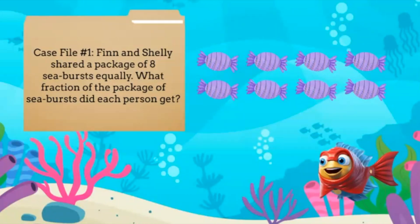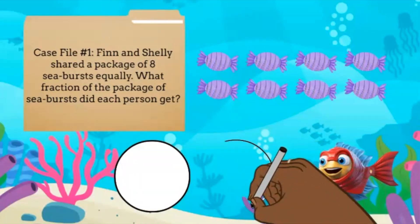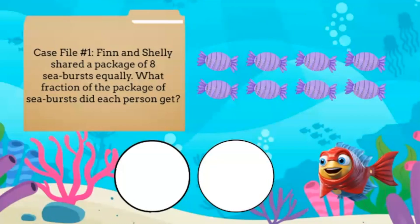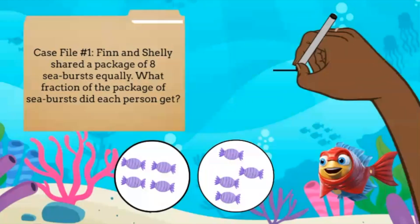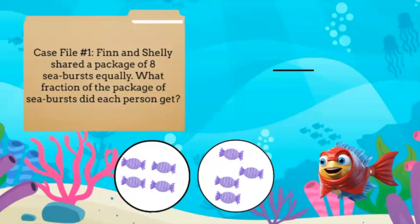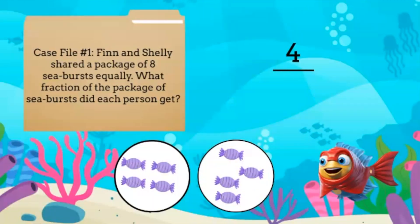Let's draw two groups, one for Finn and one for Shelley, and start partitioning the C-Bursts into each group — one for Finn and one for Shelley. Let's keep going until they're all gone. Each group has four C-Bursts, so four is the numerator. Since there are eight C-Bursts in total, eight is the denominator.